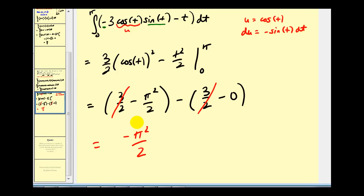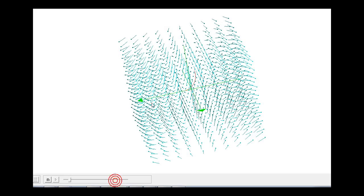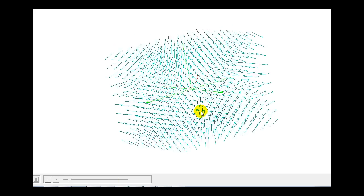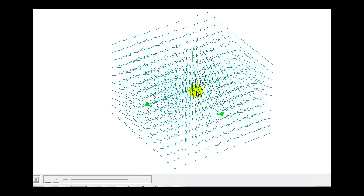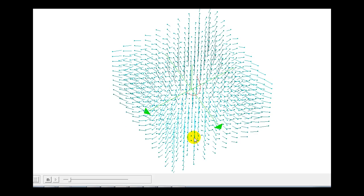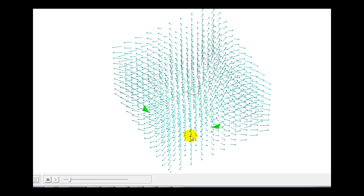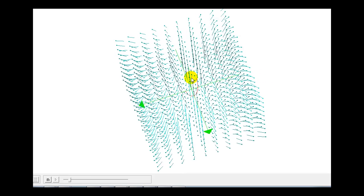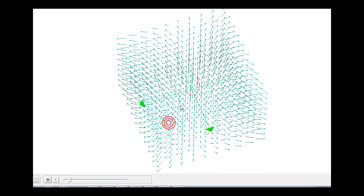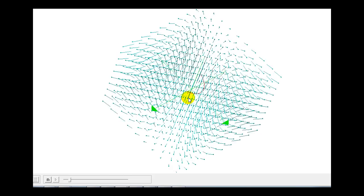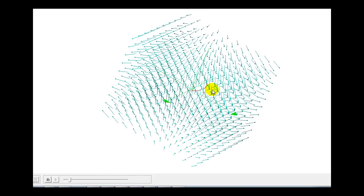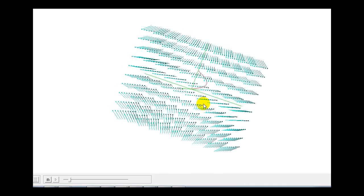As the work performed by this vector field. Let's take a look at a graph of this. Here's our three dimensional vector field in blue, our force field. In red, you can see the path through space. As a particle moves along this path from here to here, it's moving against the force field. That's why the work has a negative value this time.